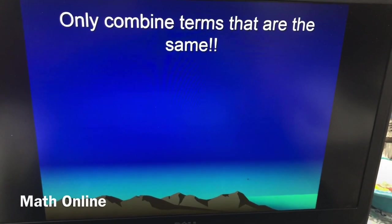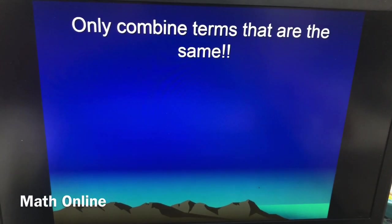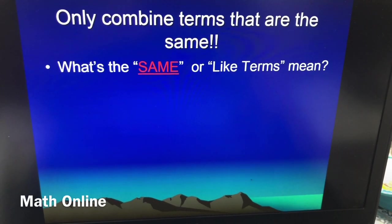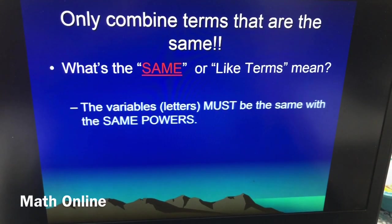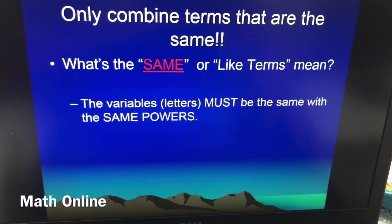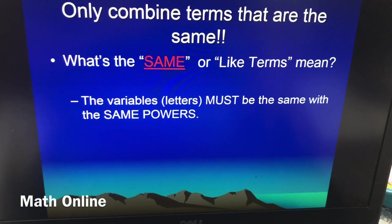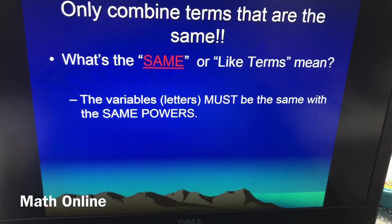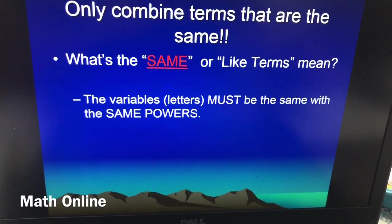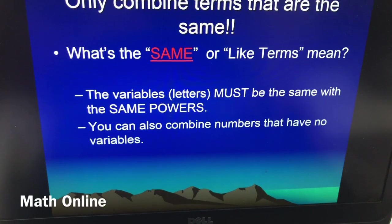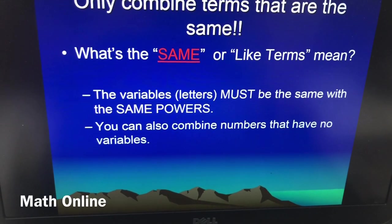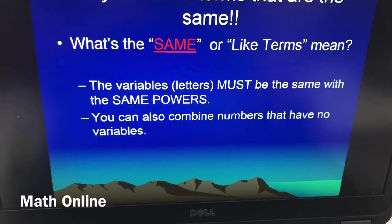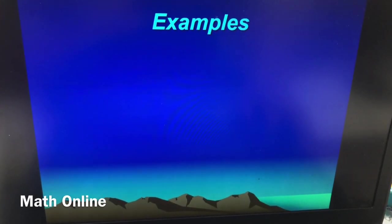All right, so rules for combining like terms: only combine terms that are the same. What's the same, or like terms mean to us? Here's the thing: the same or like terms is when a term has the same variable or the same letter. In other words, it must have the same power as well. So any term must have the same letter and the same power. The powers are the little numbers in addition to them. You can also combine numbers that have no variables. So in other words, that would be like the constants, numbers by themselves.